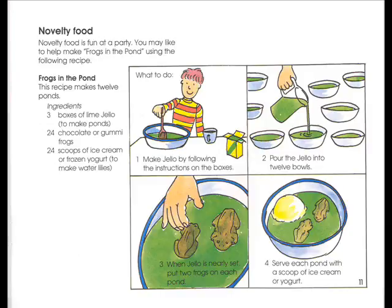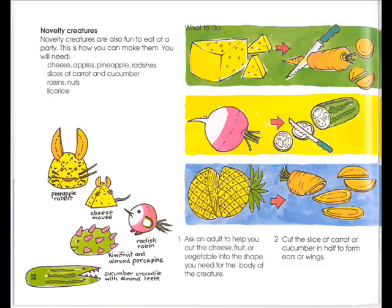Novelty creatures are also fun to eat at a party. You will need cheese, apples, pineapples, radishes, slices of carrot and cucumber, raisins, nuts, and licorice. Examples include: pineapple rabbit, cheese mouse, radish robin, kiwi fruit and almond porcupine.